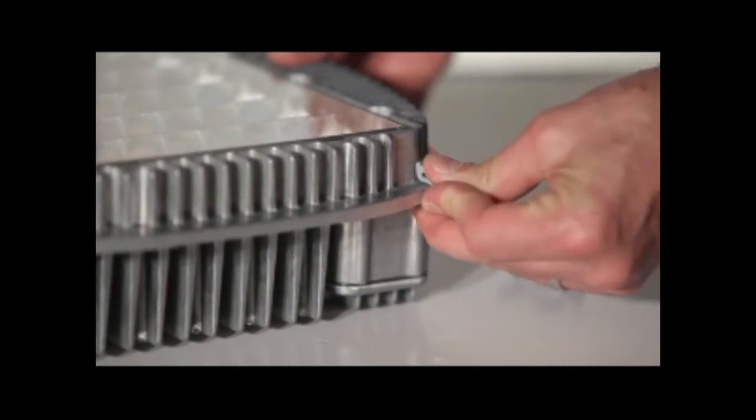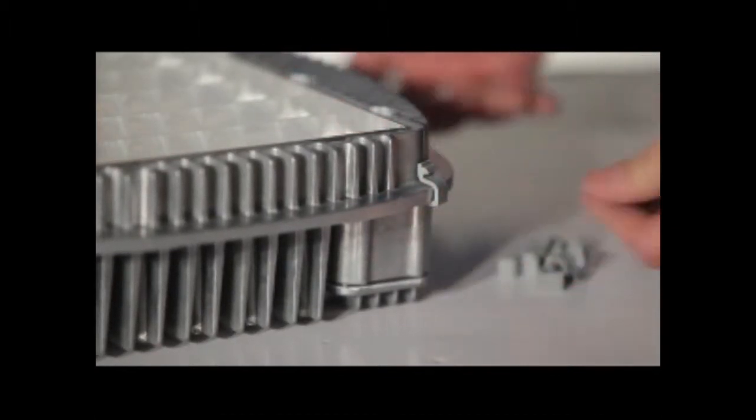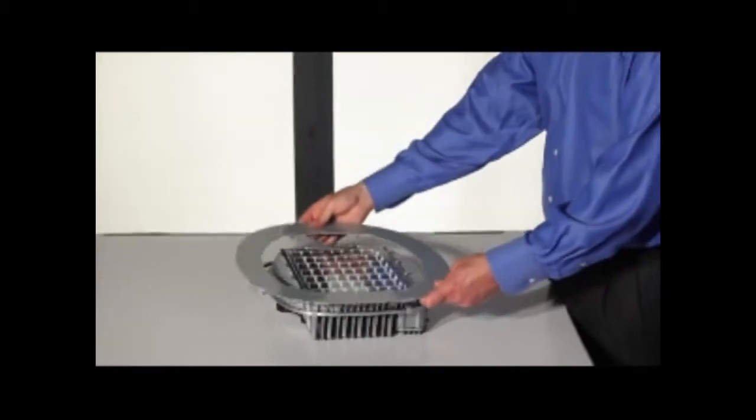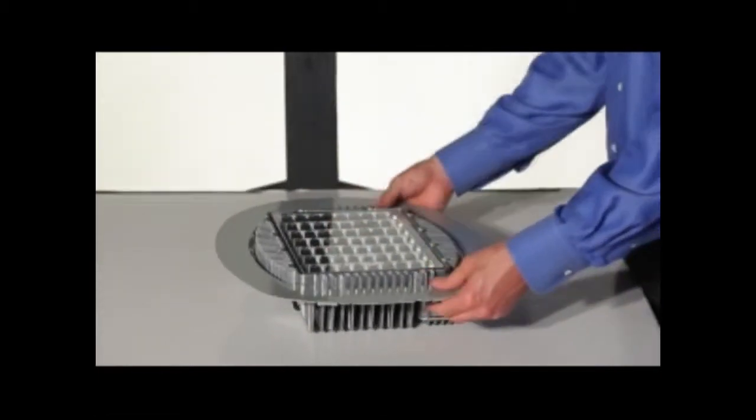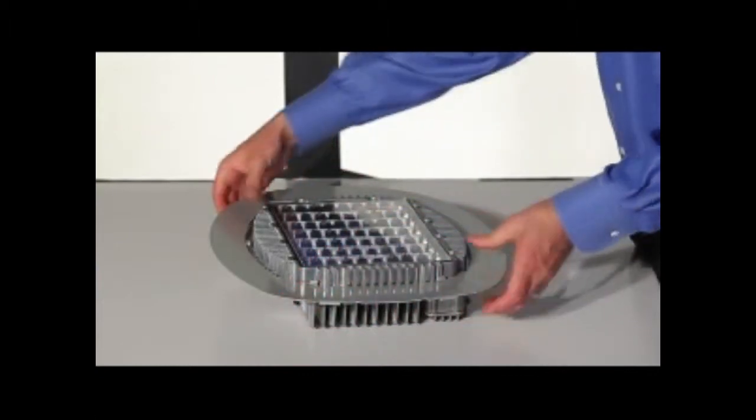First, attach the adapter plate clips to the light engine. Clip the adapter plate to the light engine. And finally, secure the light engine to the door frame as previously demonstrated.